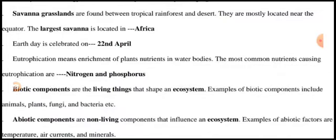Savannah grasslands are found between tropical rainforest and desert. They are mostly located near the equator. The largest savannah is located in Africa.